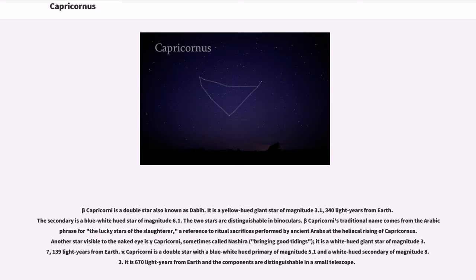Beta Capricorni is a double star also known as Dabih. It is a yellow-hued giant star of magnitude 3.1, 340 light-years from Earth. The secondary is a blue-white-hued star of magnitude 6.1. The two stars are distinguishable in binoculars. Beta Capricorni's traditional name comes from the Arabic phrase for the lucky stars of the slaughterer, a reference to ritual sacrifices performed by ancient Arabs at the heliacal rising of Capricornus.